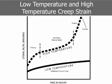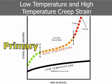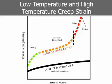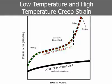The deformation at higher temperatures progresses through three distinct phases: primary, secondary, and tertiary. The three phases are shown schematically in Figure 1, Low Temperature and High Temperature Creep Strain, which plots low temperature and high temperature creep strain of a material on loading versus time at constant engineering stress and temperature. The curves are schematic, with the high temperature curve depicting all three stages.